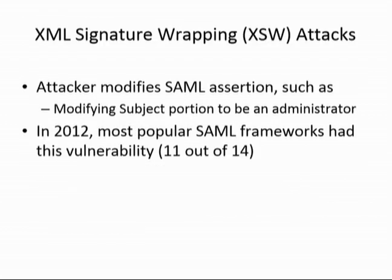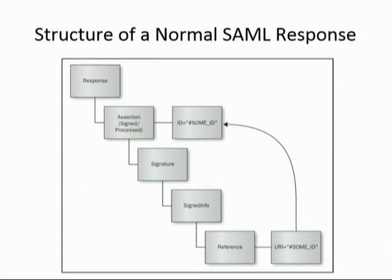With XML signature wrapping, you modify the SAML assertion — for example, modify the subject portion to say you're the administrator. Here's the structure of a SAML response: it's a bunch of XML elements. You have an assertion that is signed, which says your ID is somebody. Then you have a signature, signed info, a reference, and a URI. These are different parts of the assertion. The important part is 'ID equals somebody,' which tells the system who you are.